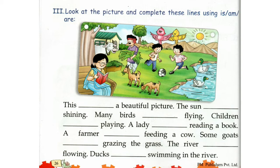Children, we use 'this' for a single object, that is, a singular noun. So we will use Is. This is a beautiful picture.